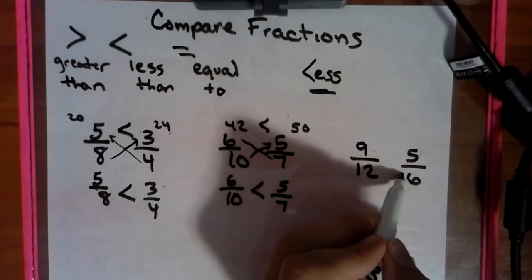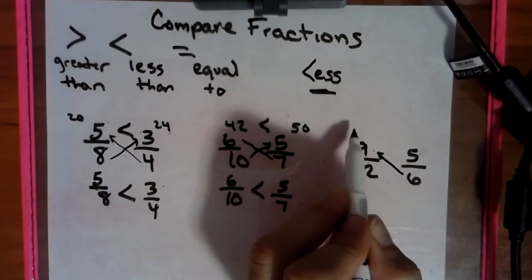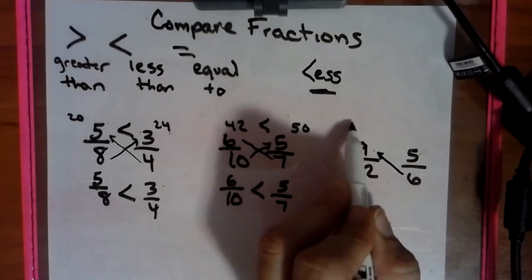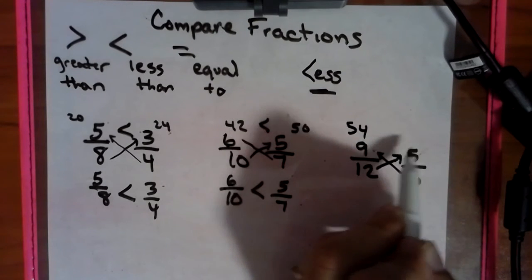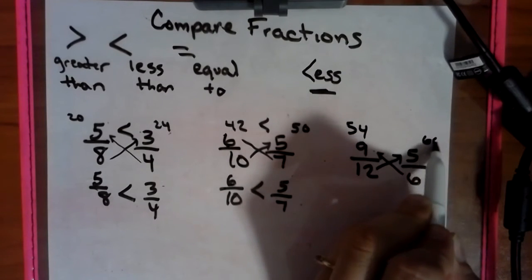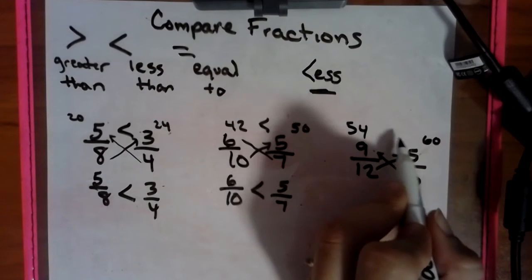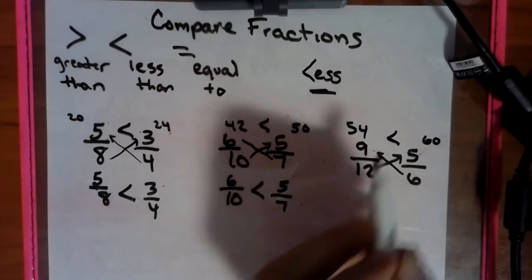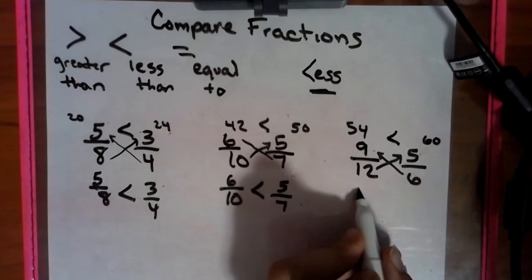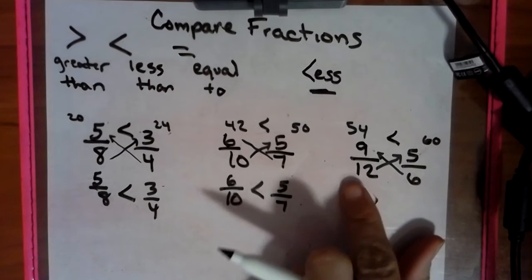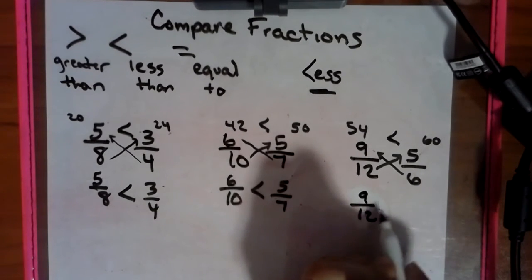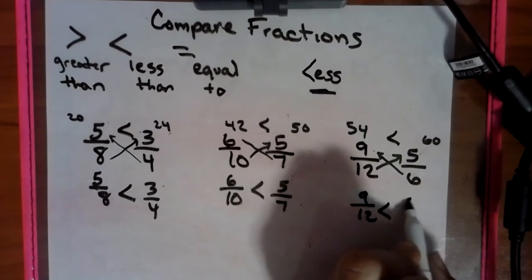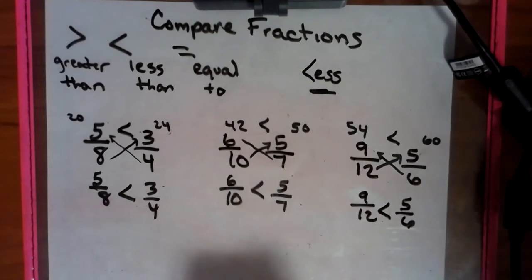We go 9 times 6 is 54, and 12 times 5 is 60. Who is bigger? That would be the 60 — my error on that — so we have 9/12 is less than 5/6.